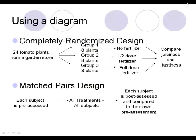Here are the different design types in diagram form. For the completely randomized design, using a tomato experiment with 24 tomato plants split into three groups of eight: the first group got no fertilizer, the second got a half dose, and the third got a full dose. At the end, tomatoes were compared for juiciness and tastiness to see if fertilizer makes them better.